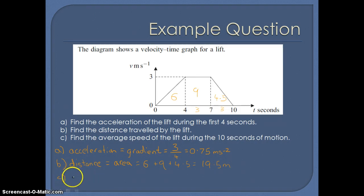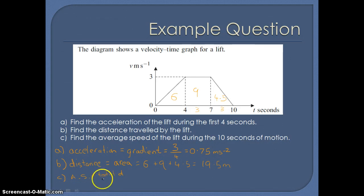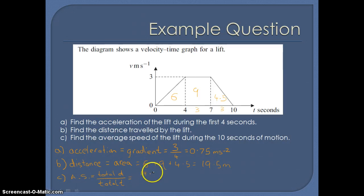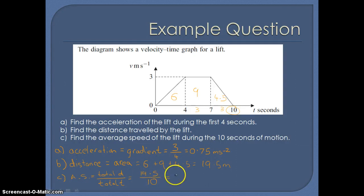Finally part c asks us to work out the average speed. Average speed equals total distance divided by total time. Our total distance is 19.5 metres and the total time, read off the graph, is 10 seconds. So 19.5 divided by 10 gives us 1.95 metres per second.